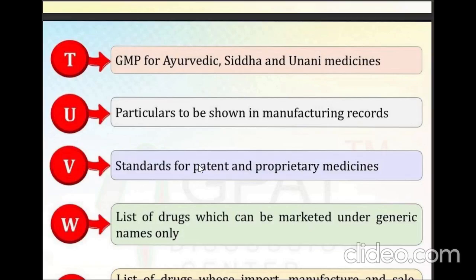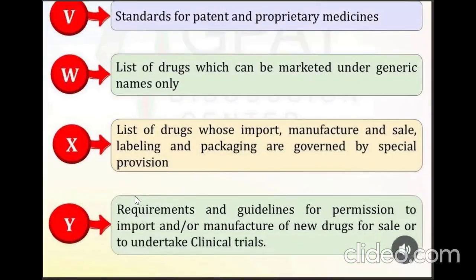Schedule X is the list of drugs whose import, manufacture, sale, labeling, and packaging are governed by special provisions. This schedule also includes guidelines for permission to import or manufacture a new drug for sale or to undertake clinical trials.